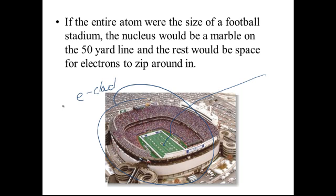...that marble would represent the size of the nucleus if the rest of the stadium was the electron cloud. So the electron cloud is huge compared to that little marble. The marble on the 50-yard line represents the protons and neutrons, and the electron cloud is where the electrons are — they could be anywhere in that region, depending on how much energy they have. That's their space: the electron cloud.